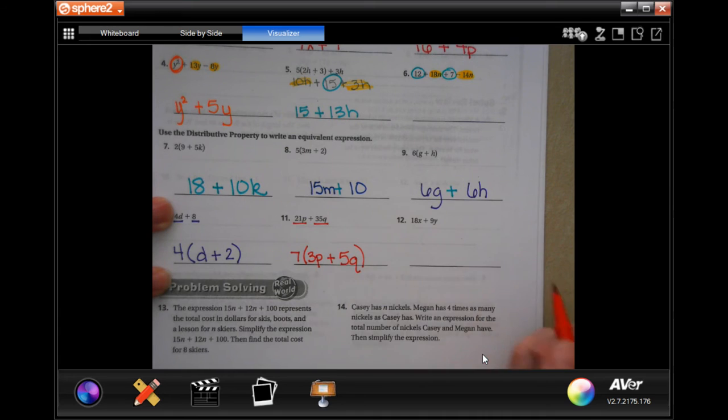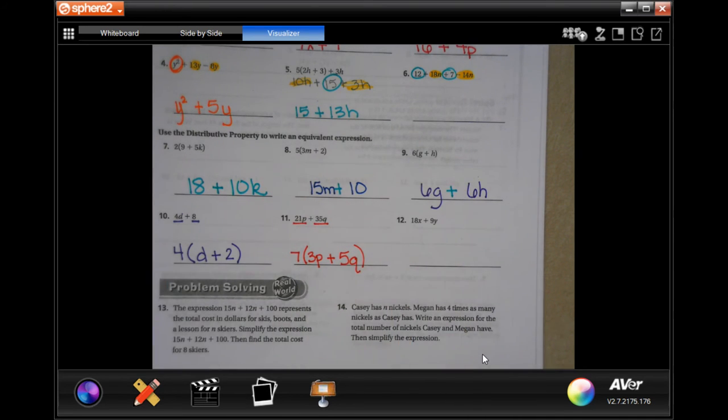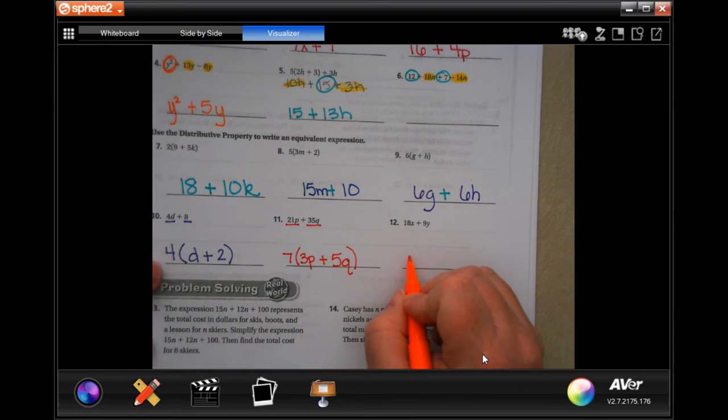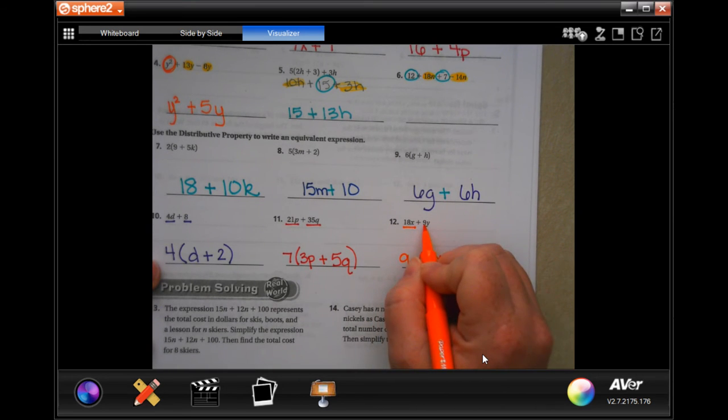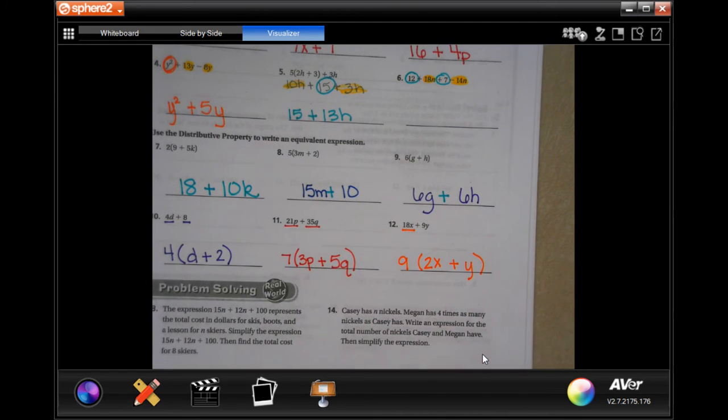So we're pulling out a number that goes into both of those, into both of the numbers. And then we're going to go from there. So 21 and 35, the only number I can think of that goes into both of them is going to be 7. So I'm going to pull 7 out. Now, I know that 7 times 3 is 21, and I need 21p, so I need to put a p there. Now, 7 times 5 is 35, and I need to keep that q there. Done. So now if I were to multiply that out, I would have 7 times 3 is 21, add the p. 7 times 5 is 35, add the q.